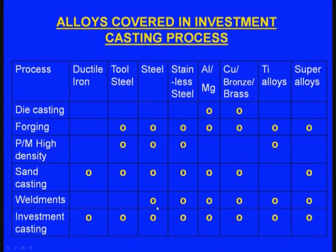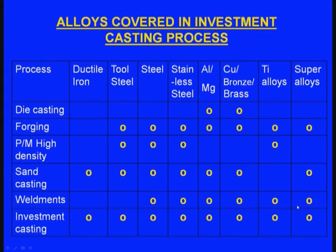If we consider weldments, steels, stainless steel, aluminum, magnesium alloys, copper, bronze, titanium alloys and super alloys can be welded, but ductile iron and tool steels cannot be welded.